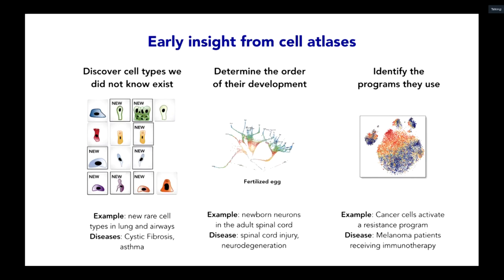When we profile complex tissues and organs at single-cell resolution, there are three kinds of questions people have repeatedly answered with good results. First, we can discover cell types that did not know exist. Second, we can understand the temporal order of biological processes — most dramatically, development from a fertilized egg to a multicellular organism, but also adult stem cell processes, the emergence and pathogenesis of disease, and cellular responses to environmental stimuli. Third, we can increasingly identify the cell programs that give cells their characteristics, which we can ideally intervene upon in disease or revert to achieve health.